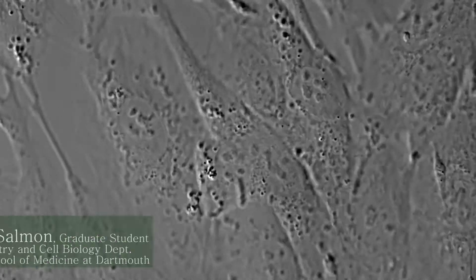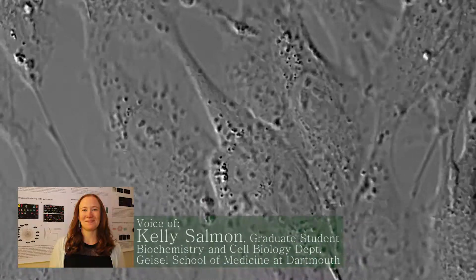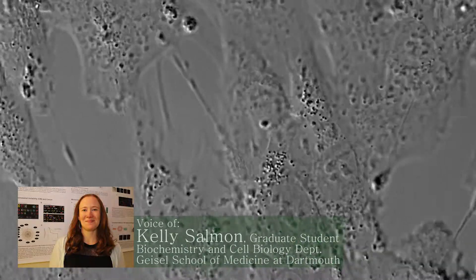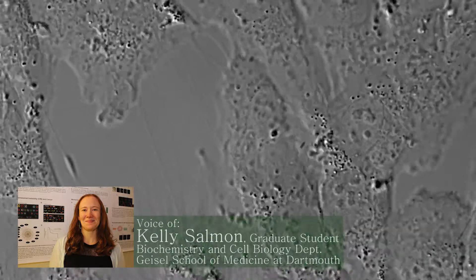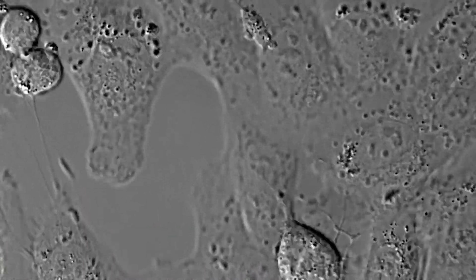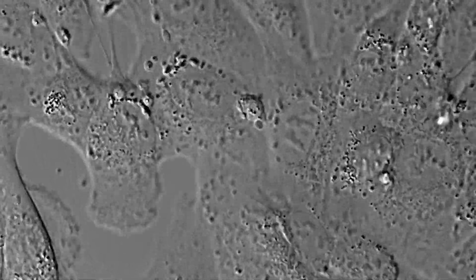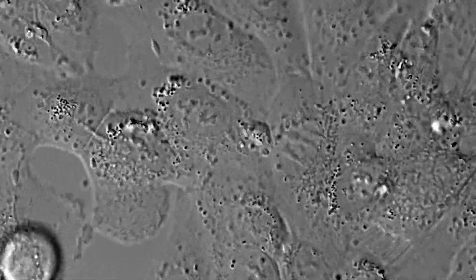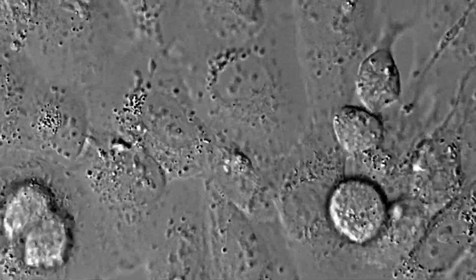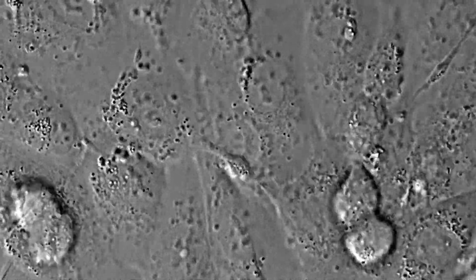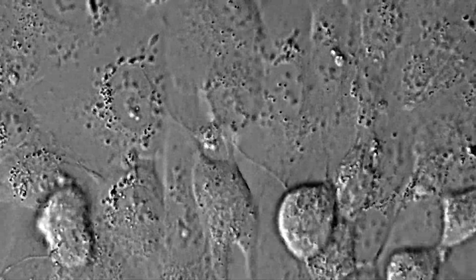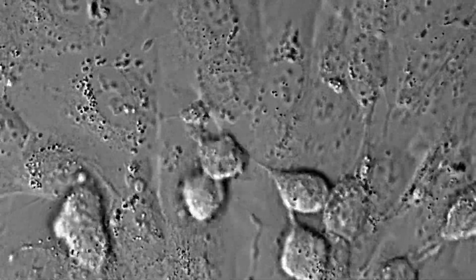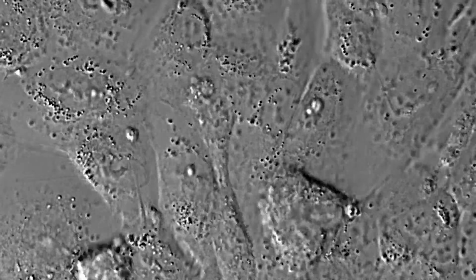Cell division is essential for life, but must occur only when it is needed. Here we can see human cells dividing under the microscope. Each parental cell rounds up and divides to produce two genetically identical daughter cells. Human cells contain 46 chromosomes, or units of the genetic material called DNA. Each resulting daughter cell inherits a complete set of 46 chromosomes.